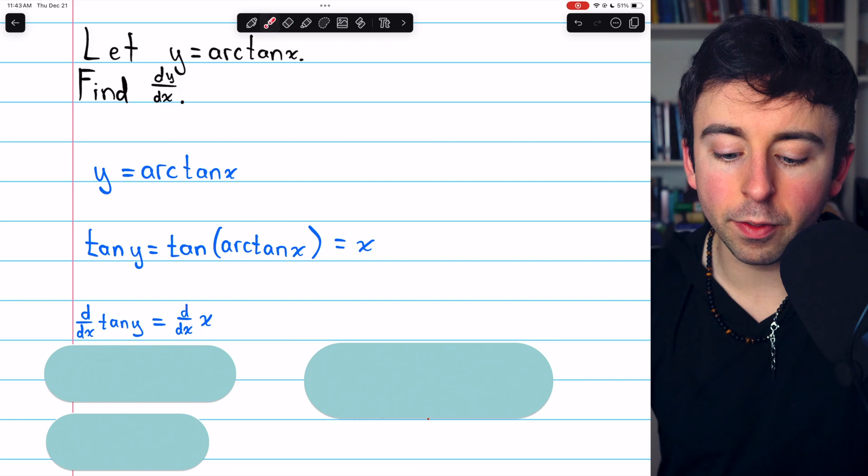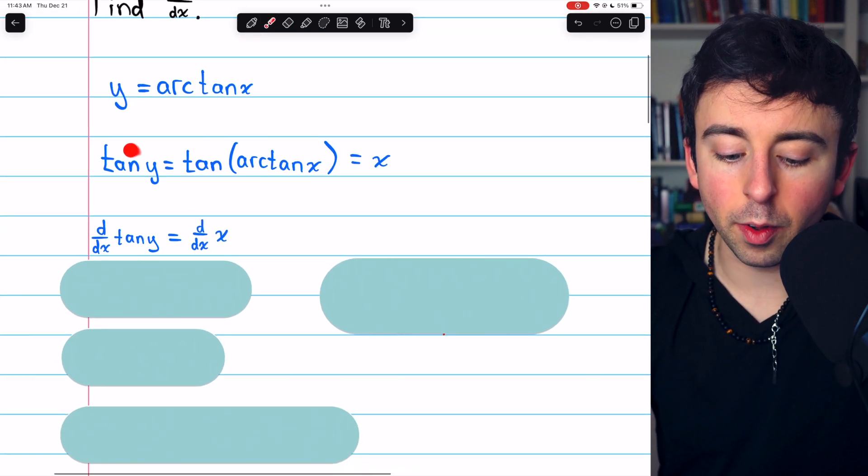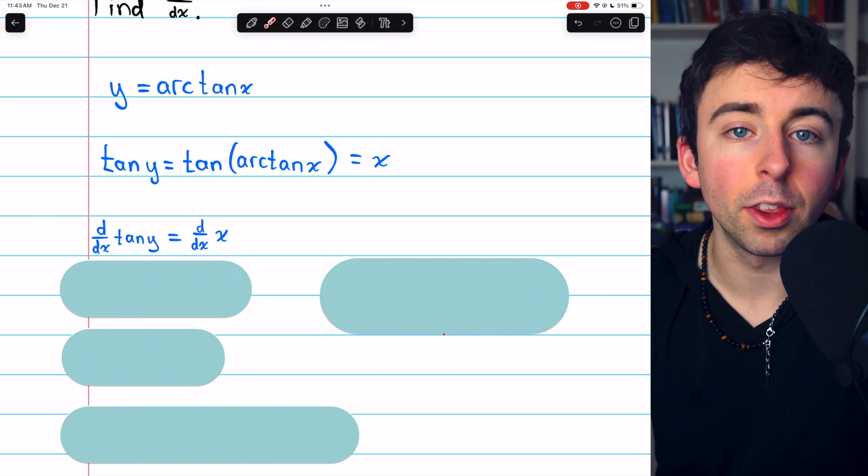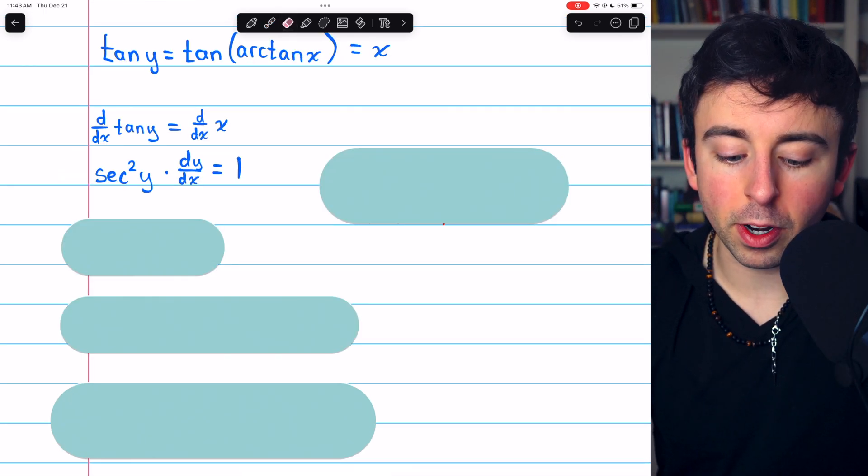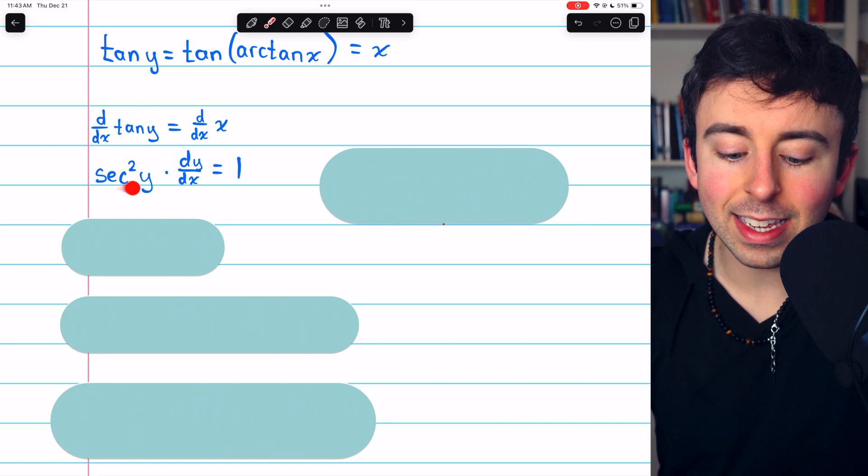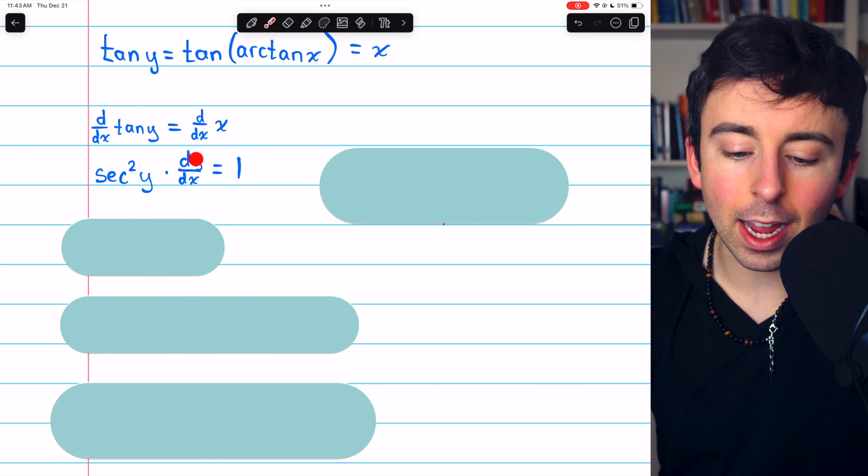Then we can take the derivative of both sides. The derivative of tan y on the left equals the derivative of x on the right. This is where the implicit differentiation comes in. On the left, the derivative of tangent y is secant squared y times dy/dx,